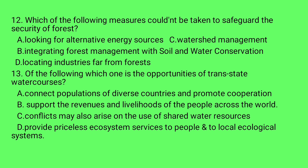Question number twelve: which of the following measures could not be taken to safeguard the security of forests? A: looking for alternative energy sources, B: integrating forest management with soil and water conservation, C: watershed management, D: locating industries far from forests. Locating industries far from forests is not a measure for forest security — rather, it is relevant to water protection. So D is the answer.